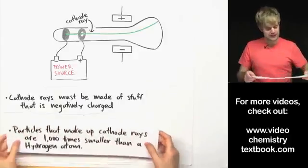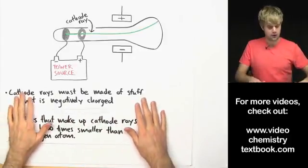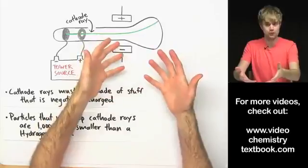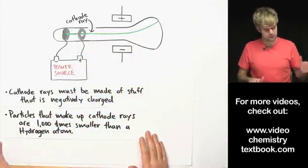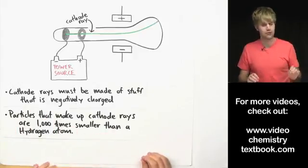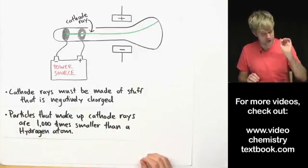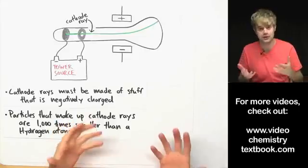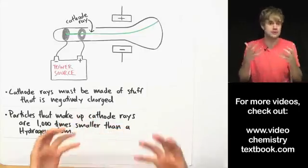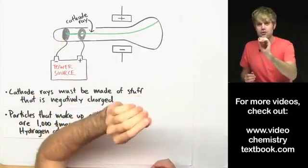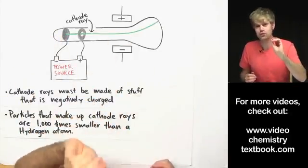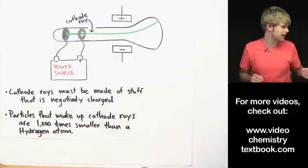He combines the information that he got from the experiments that I just told you about with some other data that he collected. And he's able to come to the conclusion that the particles that make up cathode rays are a thousand times smaller than a hydrogen atom. Hydrogen atoms are the smallest atoms. So this thing that's in the cathode rays must be really, really tiny compared to an atom.